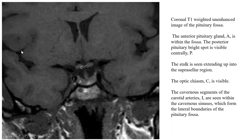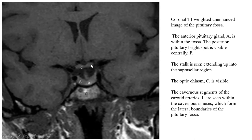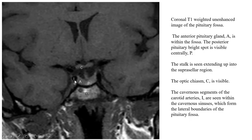Here again what I'm showing is a T1 — because the CSF is dark — but this is a coronal image, not sagittal. Again we can see the anterior pituitary marked A, the posterior pituitary again visible as a bright spot. We can see the pituitary stalk right in the middle, and the optic chiasm. Another important structure is the clivus (CL). The arteries we are seeing here are the cavernous segments of the carotid arteries, seen within the cavernous sinus.